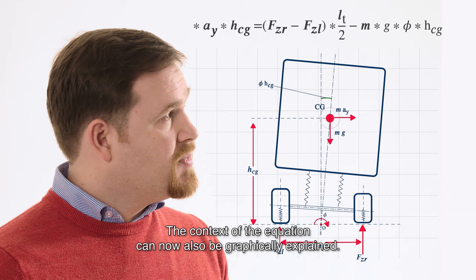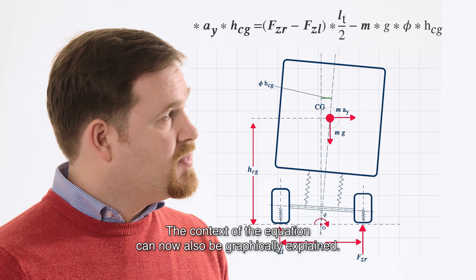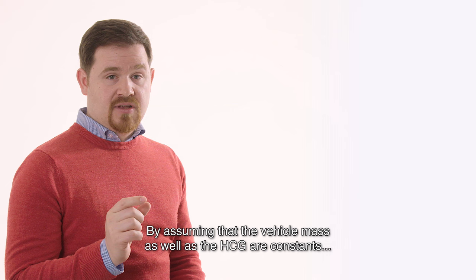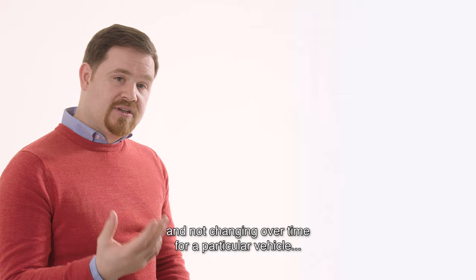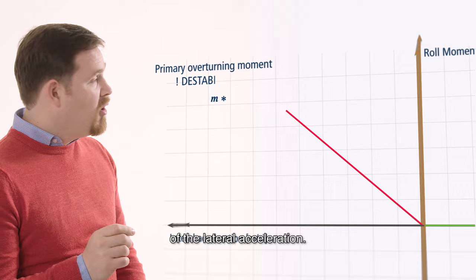The context of the equation can be now also graphically explained. By assuming that the vehicle mass as well as the height of the center of gravity are constants and not changing over the time for a particular vehicle, we can plot the destabilizing moment as a linear function of lateral acceleration.